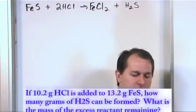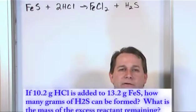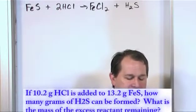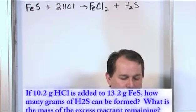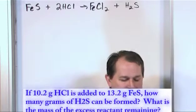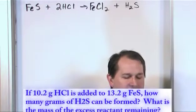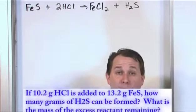And our question is as follows. If 10.2 grams of hydrochloric acid is added to 13.2 grams of iron sulfide, how many grams of hydrogen sulfide can be formed? That's question one.